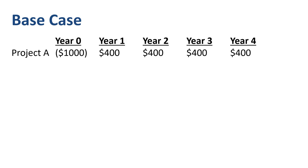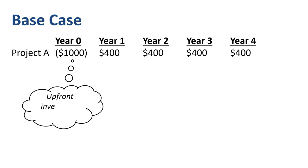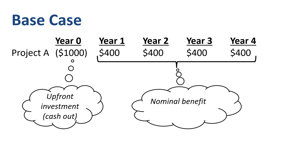Our base case is project A. It has an upfront investment of $1,000, shown as a negative — an outflow — and four years of expected nominal benefits of $400 each, shown as positives, inflows. We are going to compare the cash flow profile of project A to that of project B.